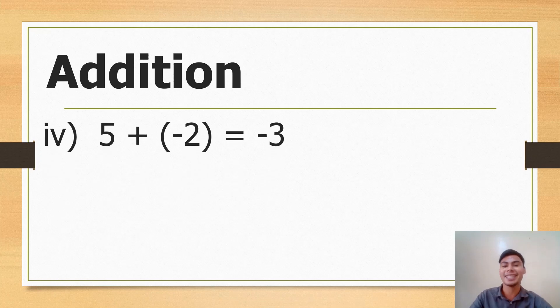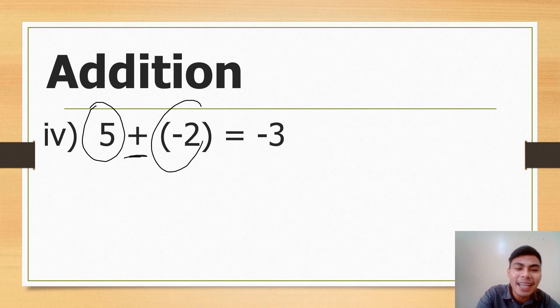So fourth case. Okay, here we are still adding different signs, pero mas malaki si positive. Okay again, we are adding different signs, positive and negative. Ano nga ang gagawin, guys? Subtract. 5 minus 2 is 3. Okay, tapos ano ba dapat ang sign? Is it really negative or positive? Parang may wrong sa presentation. Is it really positive or negative? Okay, look. 2 and 5, compare. Ano ang mas malaki? Sino ang mas malaki sa kanya? Si 5. Okay, and 5 has a positive sign. So ang answer dapat, guys, is positive 3, or just 3.